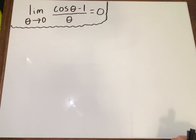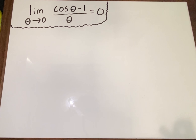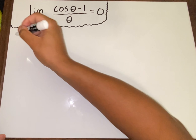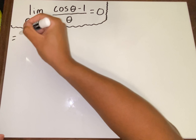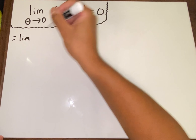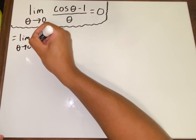Alright, what's up everyone. We're gonna prove this thing — this limit used to confuse the hell out of me. We're gonna start off by saying this is the limit, and I'm going to multiply by the conjugate.